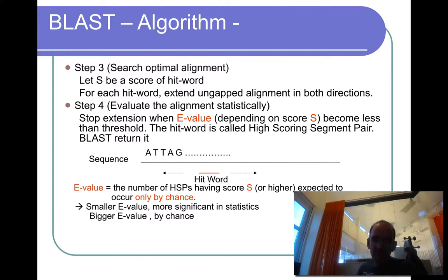So E-value is the number of high-scoring pairs that are having a score S or higher expected to occur only by chance. So this you can actually calculate analytically for ungapped alignment. For gapped alignment, you can approximate it.